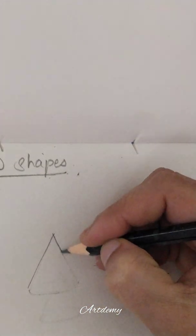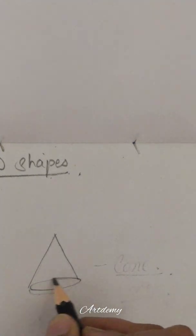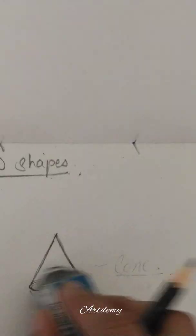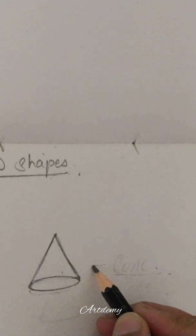Now we will draw a cone like this and an oval, and it has become a perfect cone shape. Erase the extra lines.